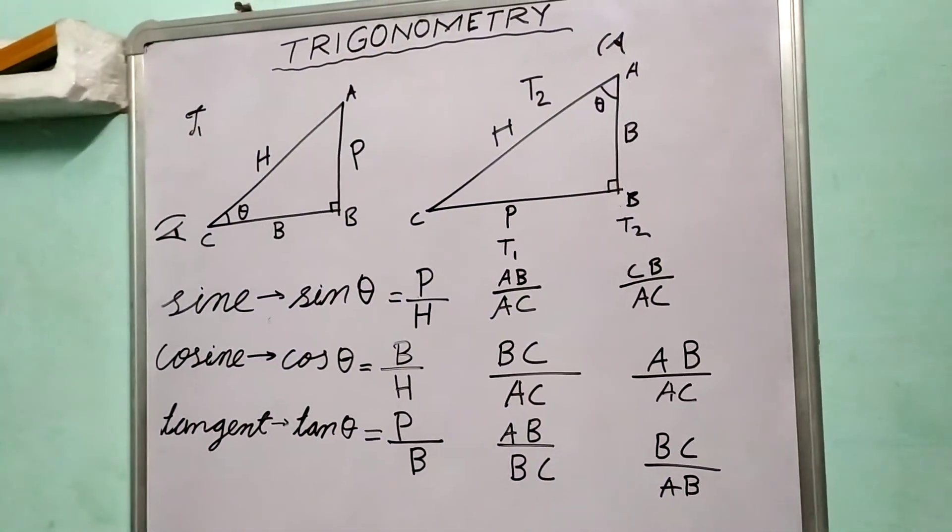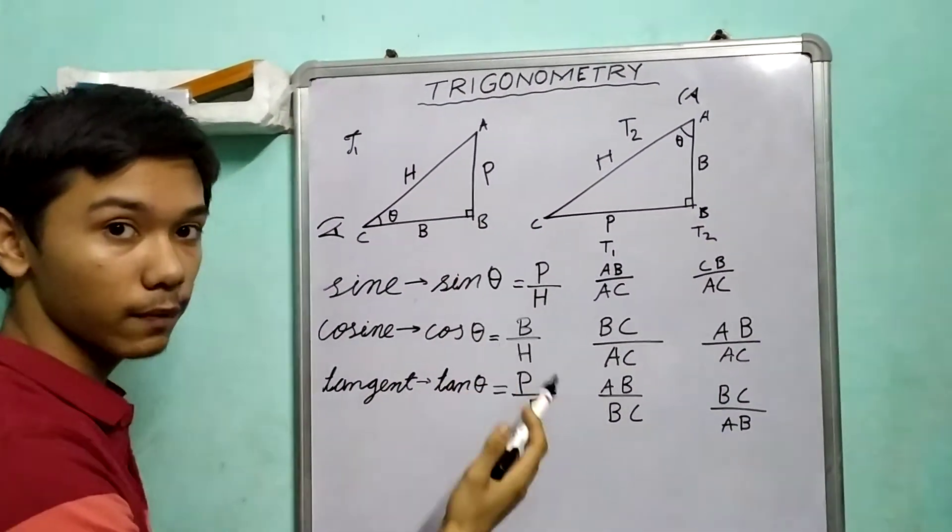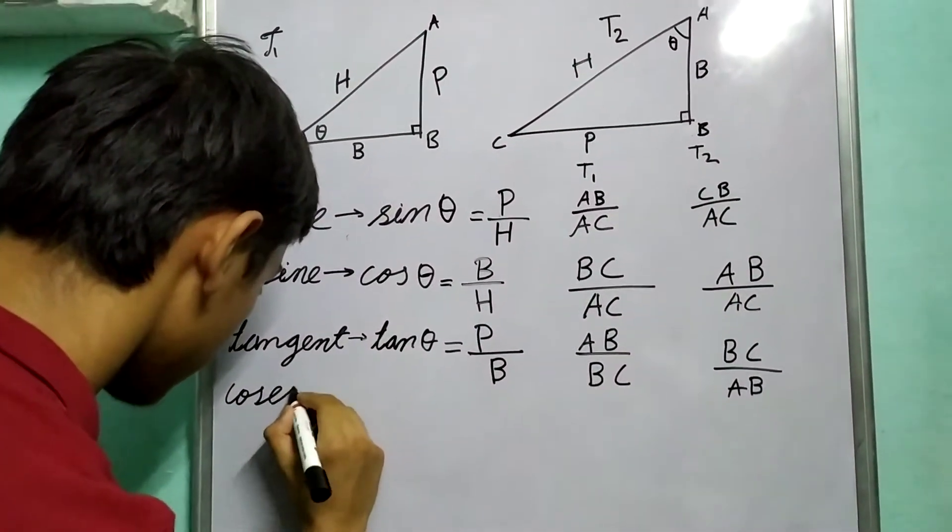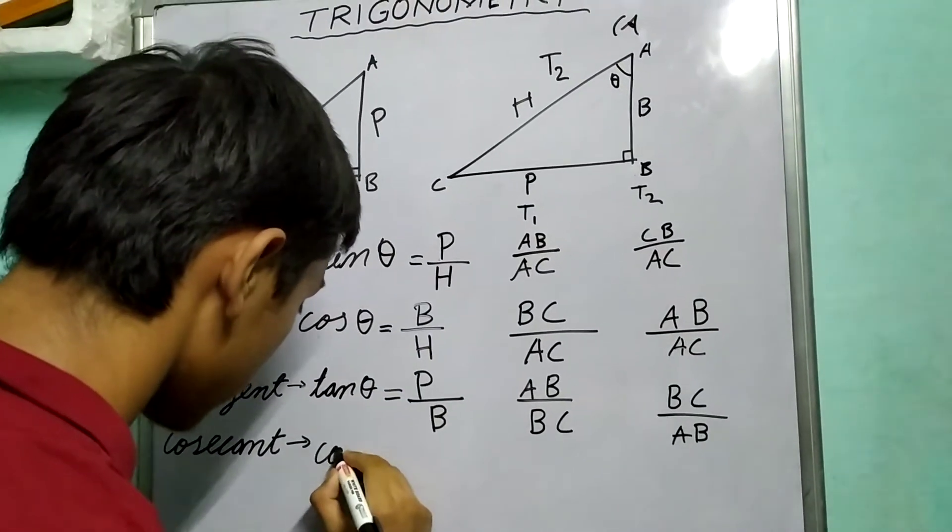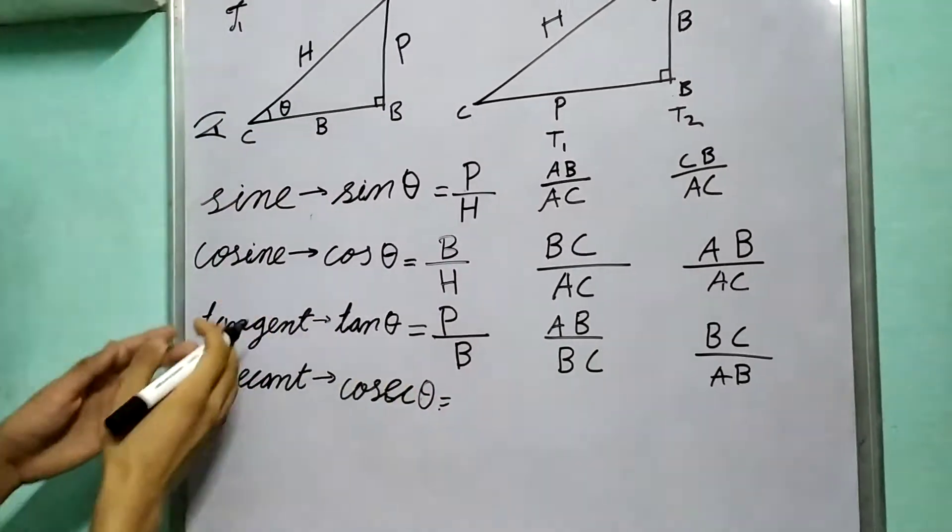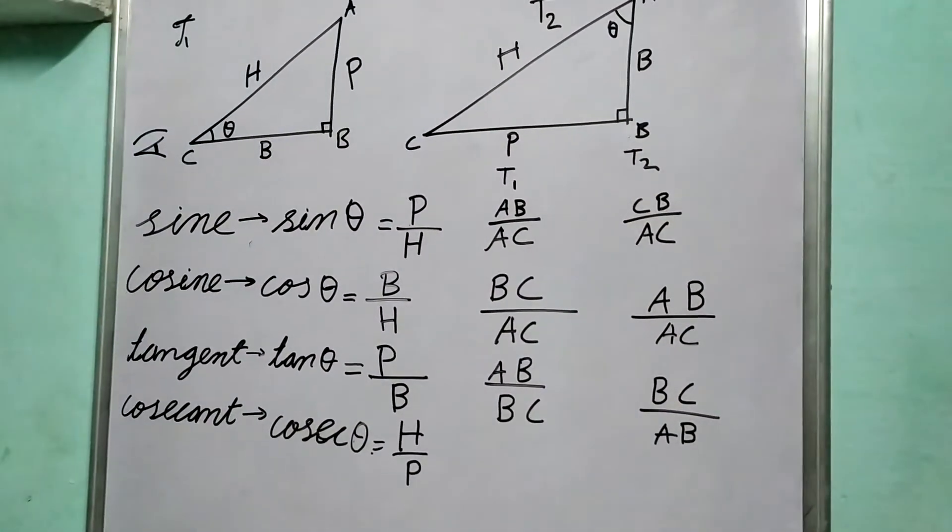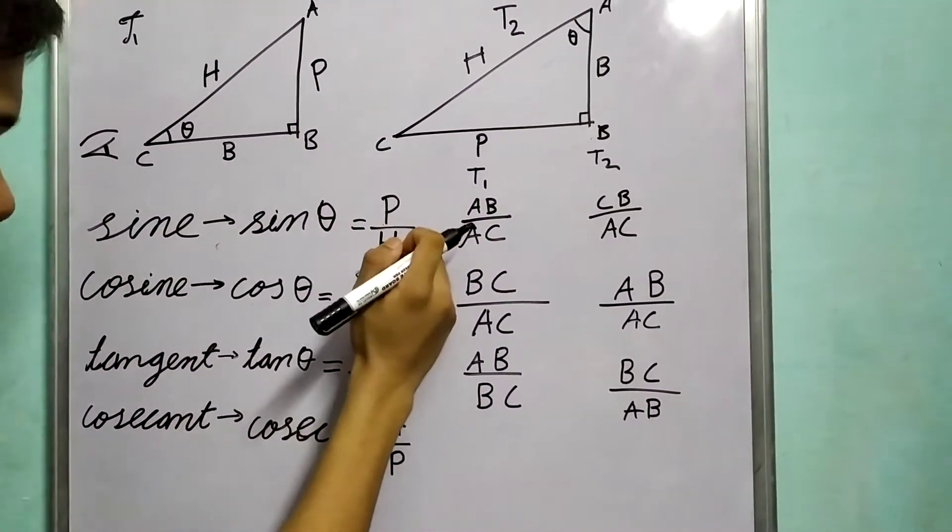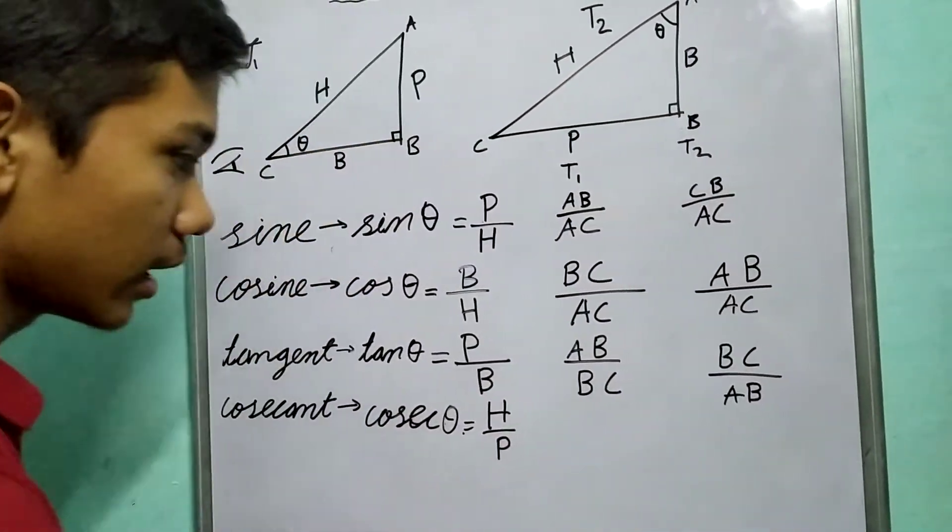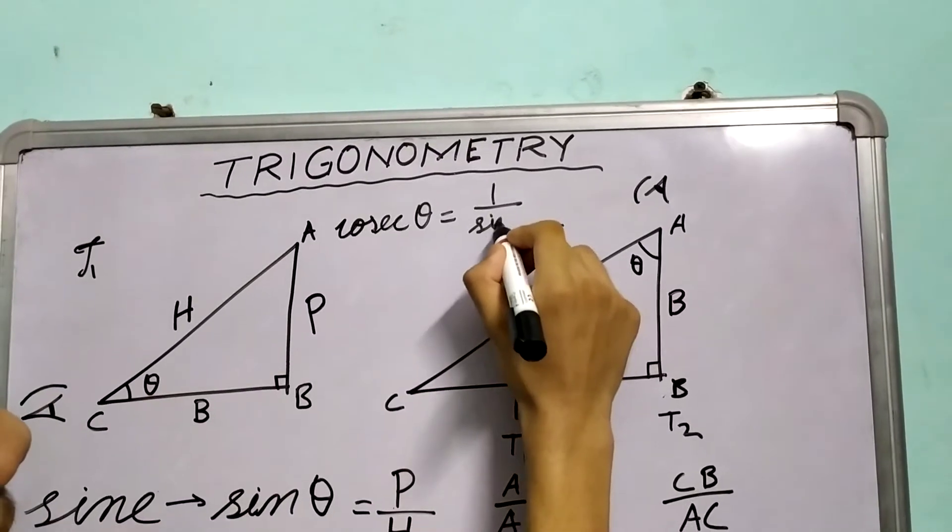Now one more thing can happen. These three basic ratios, we can have their reciprocals too. So if this is P by H, the reciprocal of it will be H by P. And it turns out we do have a trigonometric function, it is known as cosecant, abbreviated as cosec. Cosec of theta is H by P. Now clearly, sin theta is P by H and cosec of theta is H by P. Therefore, we can say that cosec of theta is 1 upon sin theta.